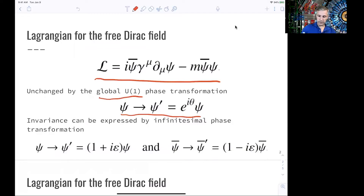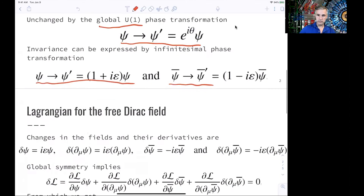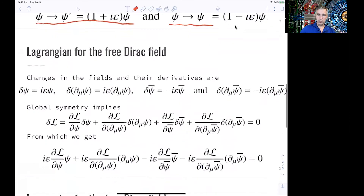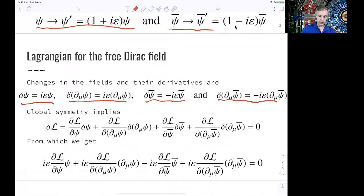We can express this symmetry with an infinitesimal phase transformation, as shown here for our fields and for our adjoint fields. For the fields and the derivatives, we just have to do the math, and we find those expressions, which we can then put back into our Lagrangian.